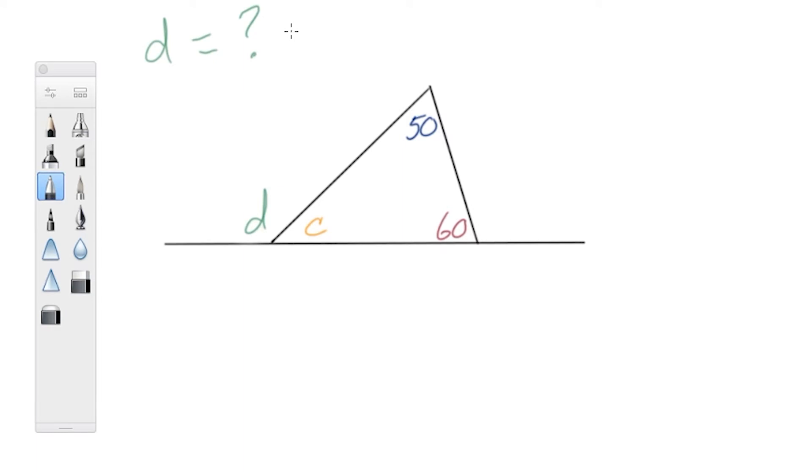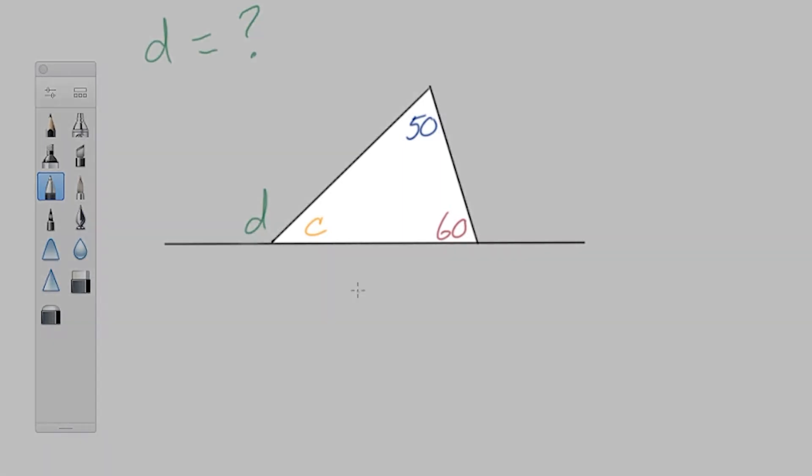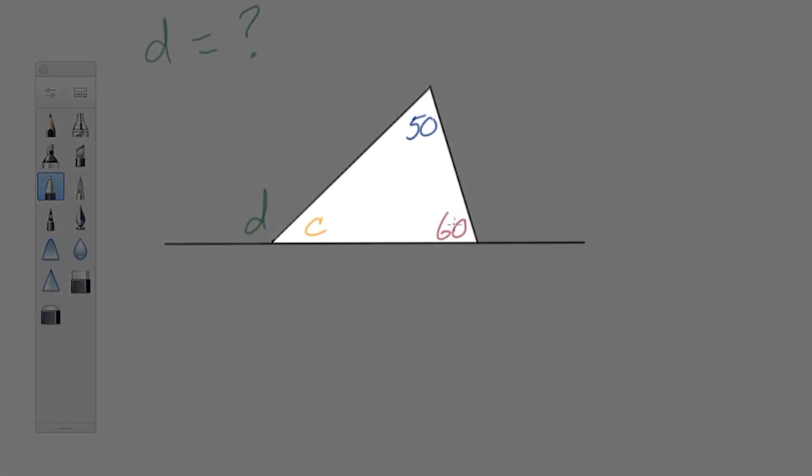So our task is to find the measure of angle D. What can we say about this triangle? Well, one thing we could say is we can remember that the sum of the interior angles of a triangle, so that's these three, is 180.